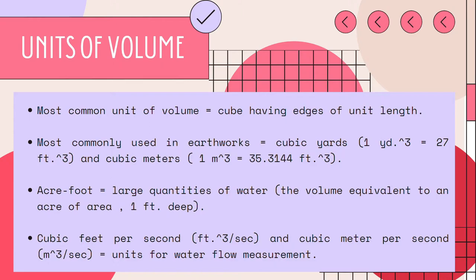The acre foot, which is the volume equivalent to an acre of area one foot deep, is commonly used for large quantities of water, while cubic feet per second and cubic meters per second are the usual units for water flow measurement.